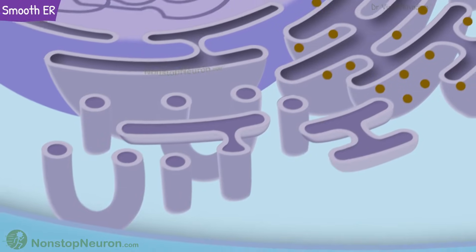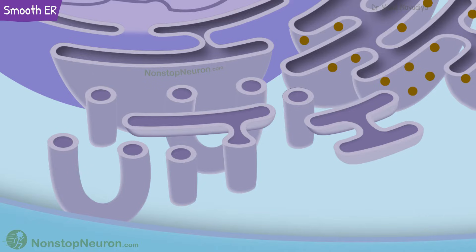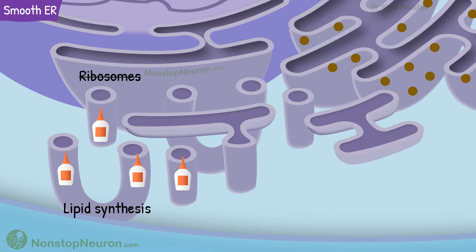Now let's see the smooth endoplasmic reticulum. It's a network of tubules. It has no ribosomes, and that's why it is smooth. It contains enzymes for lipid synthesis, so one of its functions is the synthesis of lipids. It is found abundantly in cells involved in lipid metabolism, for example, cells synthesizing steroid hormones.